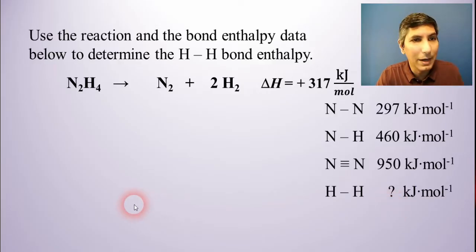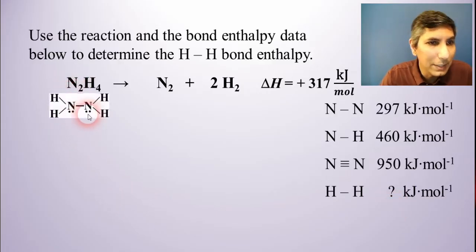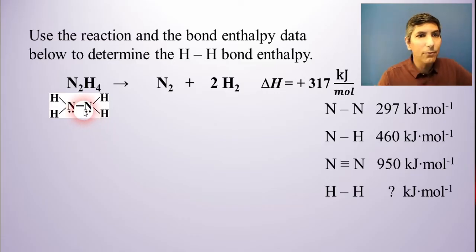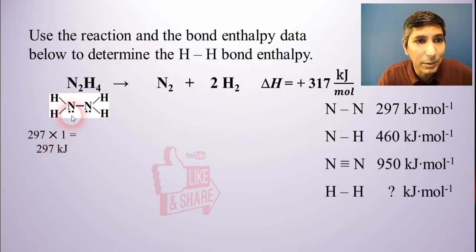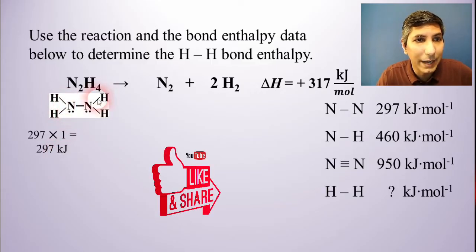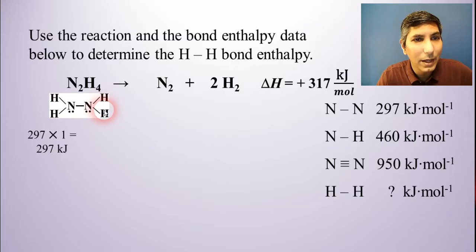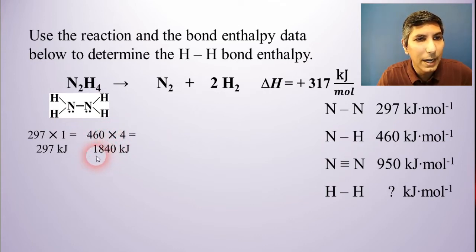Well, we're going to do this the same way. We'll start with the N2H4, the hydrazine there. And so we have two types of bonds here. We have a nitrogen-nitrogen single bond. And so that is 297 kilojoules per mole. We also have four of these nitrogen-hydrogen single bonds. And those are 460 kilojoules per mole. So I'm going to multiply that number by four since I have four bonds. And that's 1,840 kilojoules.